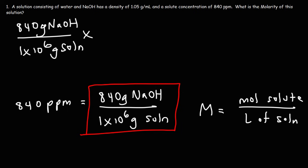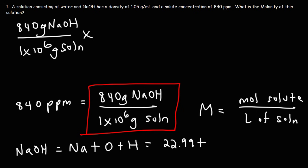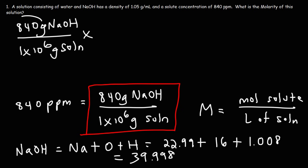Now let's convert from grams to moles. We need the molar mass of sodium hydroxide, so we add the atomic weights of each of the three elements. According to the periodic table, sodium is 22.99, oxygen is 16, and hydrogen is 1.008. Adding these gives 39.998, but since 840 is a nice round number, we'll round the molar mass to 40 grams per mole.